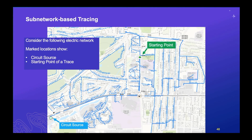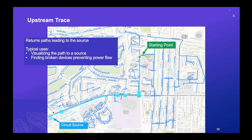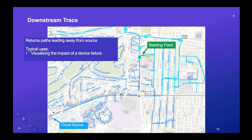Consider an electric network with lines and a circuit source in the lower left. A subnetwork trace from a starting point in the middle center would return the extent of the entire circuit — typically used to visualize circuit coverage or plan inspection and damage assessment. An upstream trace returns paths leading to the source; typical uses include visualizing how power flows from the source or finding broken devices preventing power flow. A downstream trace returns paths leading away from the source — typically used for visualizing the impact of a device failure.